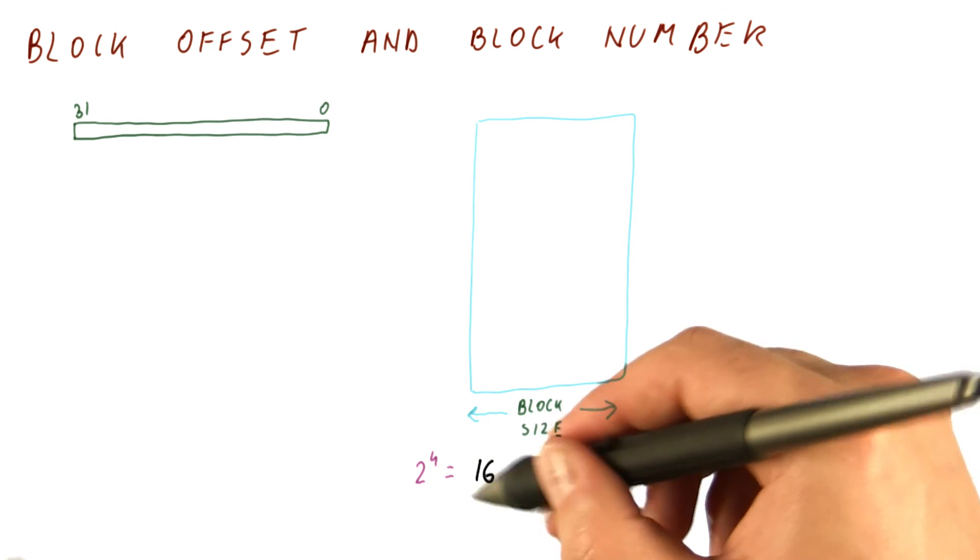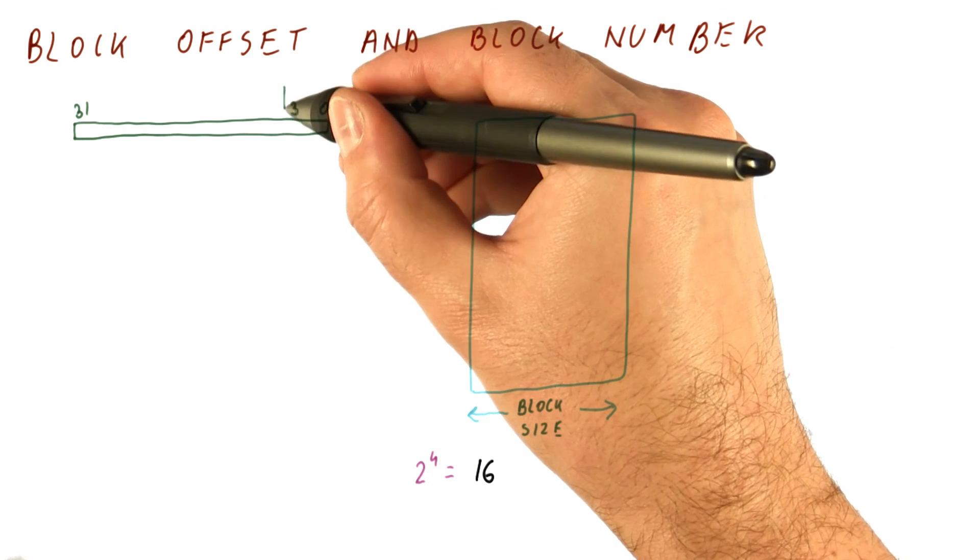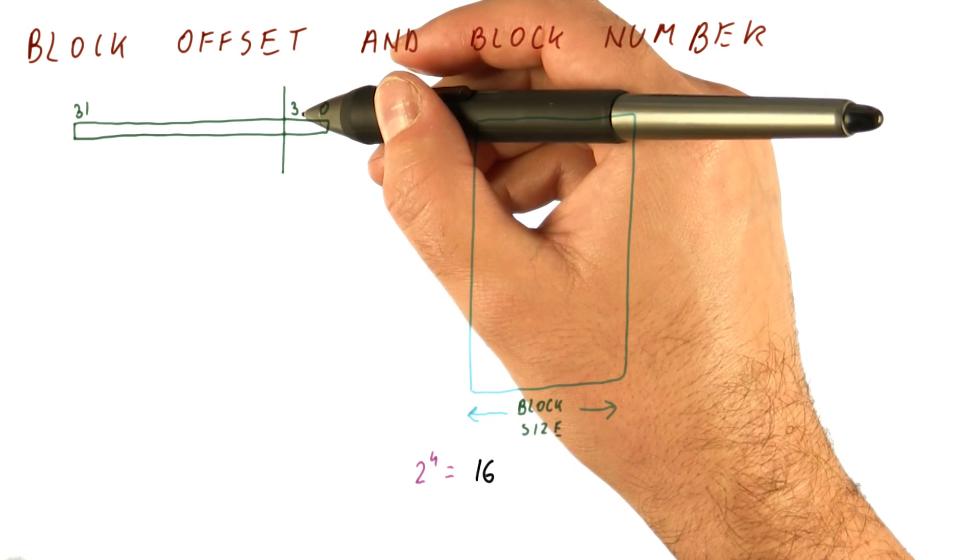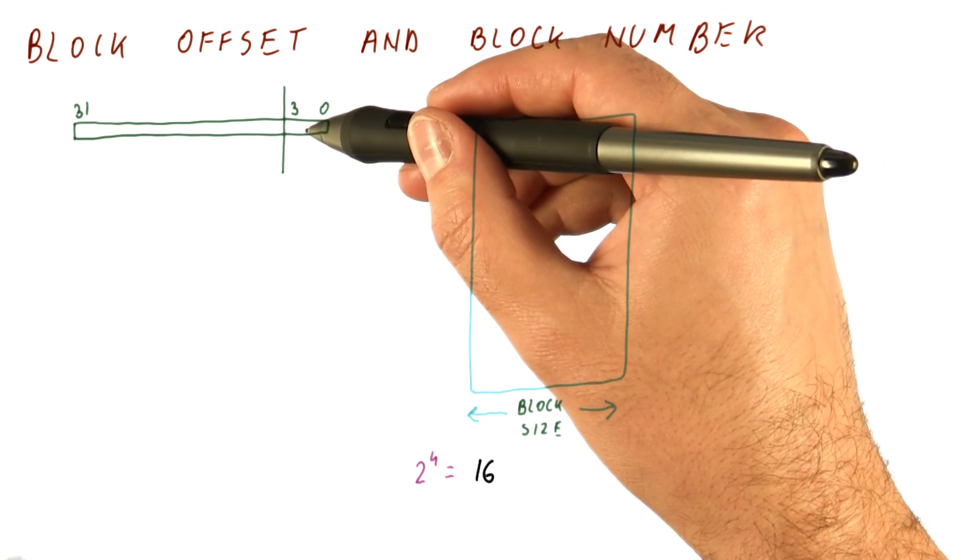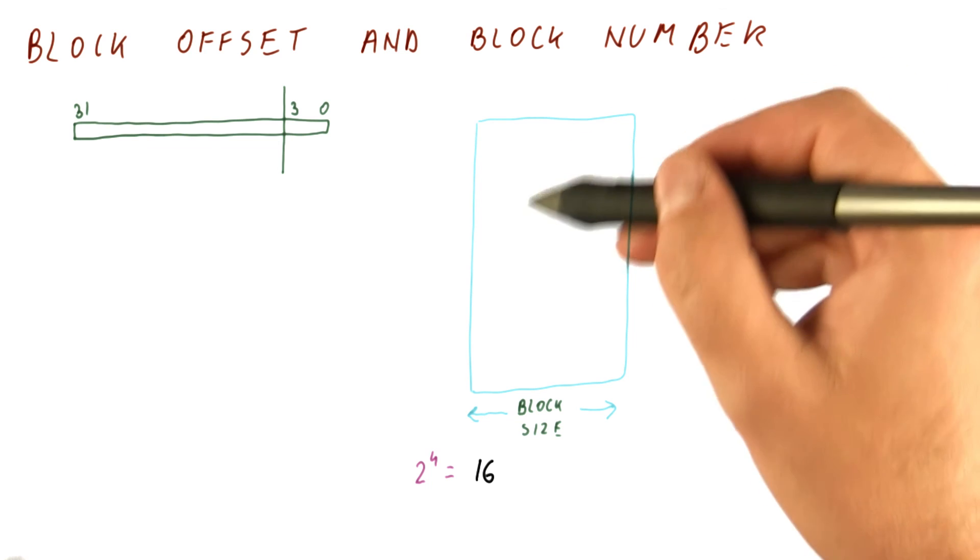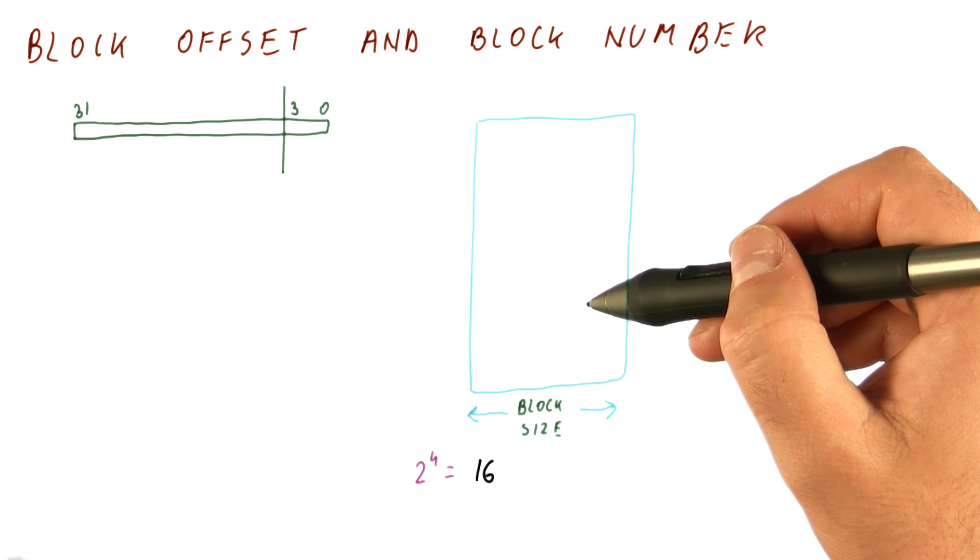That means bits 0 through 3 will tell us, once we find the block in the cache, which part of the block to read.